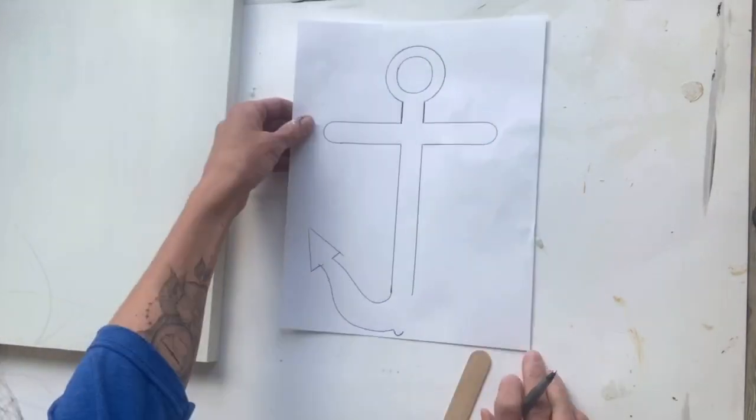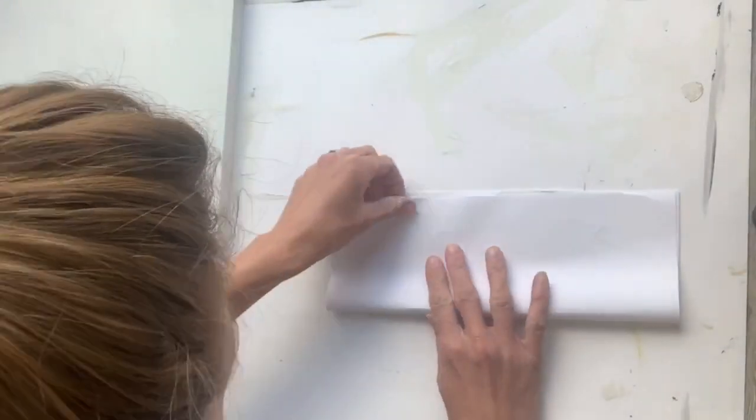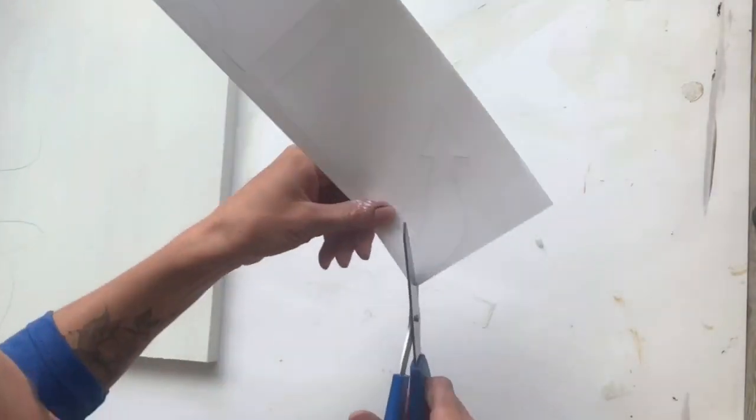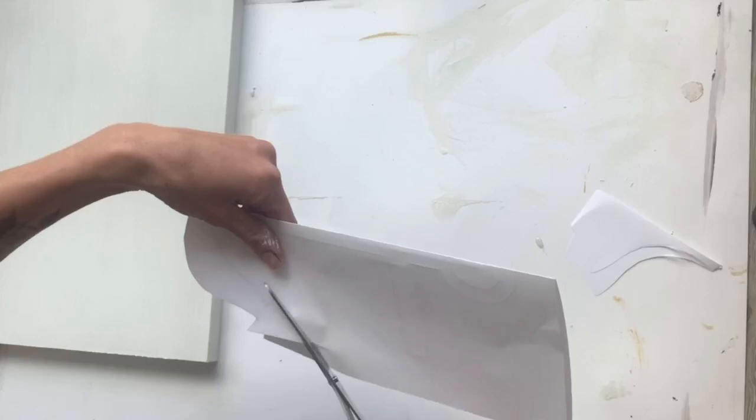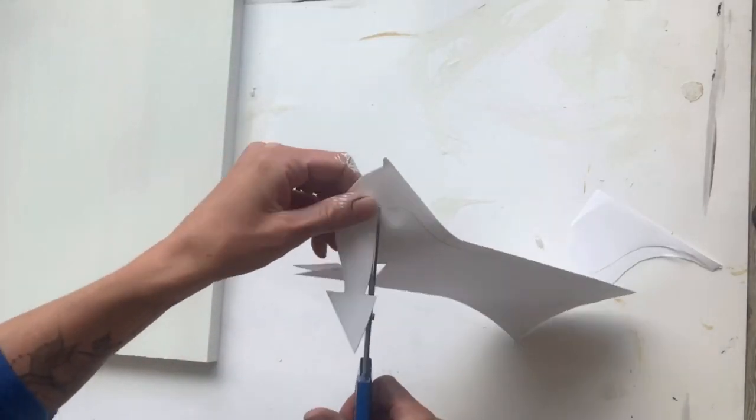Once I had that complete I folded it in half so the bottom of the anchor was even on both sides and then I just cut it out.